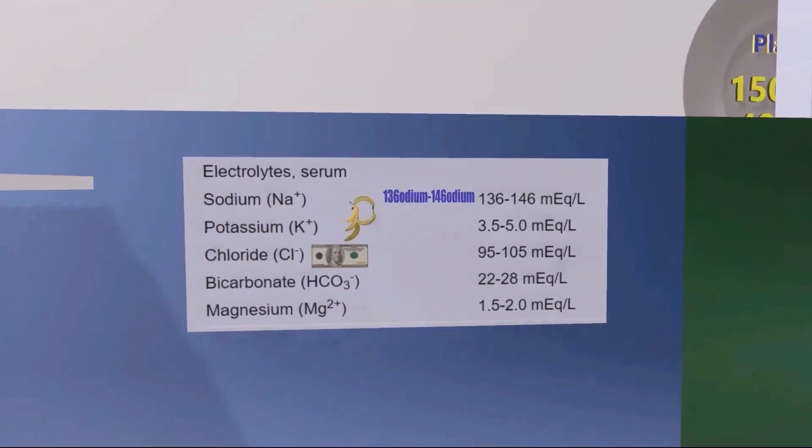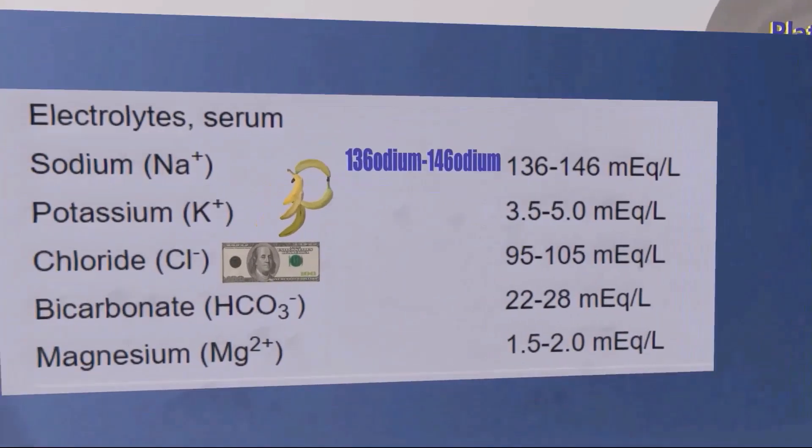Now here we have a poster of serum electrolytes which most medical students are kind of aware of because they come up so much. But if you want a little bit of a reminder, let's zoom in over here and take a look. Sodium should be between 136 to 146. For that you can imagine someone writing out 136 sodium to 146 sodium.